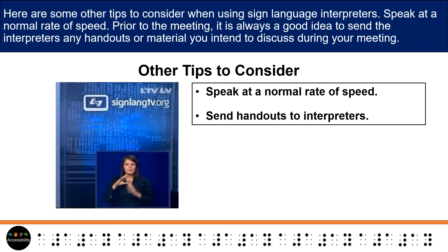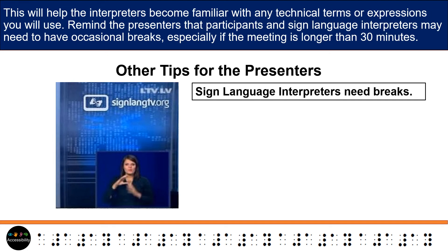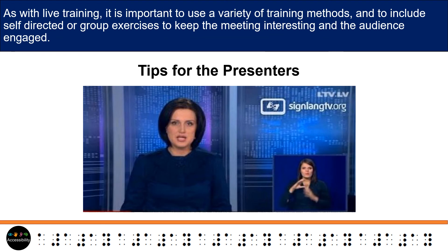5. Speak at a normal rate of speed. Prior to the meeting, it is always a good idea to send the interpreters any handouts or material you intend to discuss during your meeting. This will help the interpreters become familiar with any technical terms or expressions you will use. Remind the presenters that participants and sign language interpreters may need to have occasional breaks, especially if the meeting is longer than 30 minutes. As with live training, it is important to use a variety of training methods and to include self-directed or group exercises to keep the meeting interesting and the audience engaged.